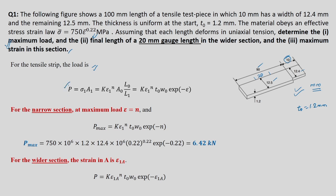The load is given by P equals sigma₁ times a₁. We already derived that sigma₁ is k epsilon power n, and a₁ is a₀ l₀ divided by l₁, since a₁ l₁ equals a₀ l₀. So a₁ equals a₀ l₀ / l₁. Here a₀ equals t₀ w₀ and l₀/l₁ equals exponential minus epsilon.